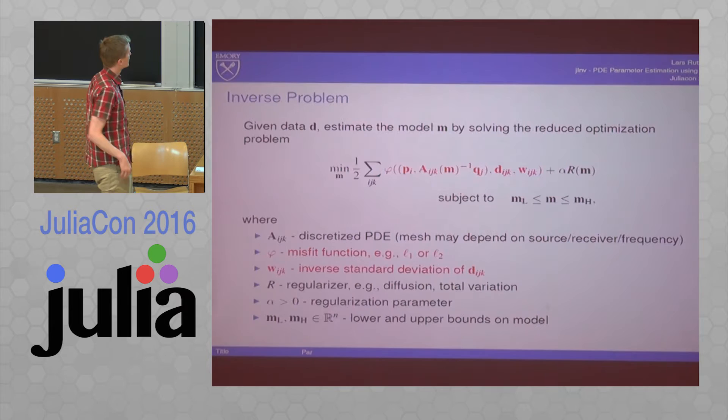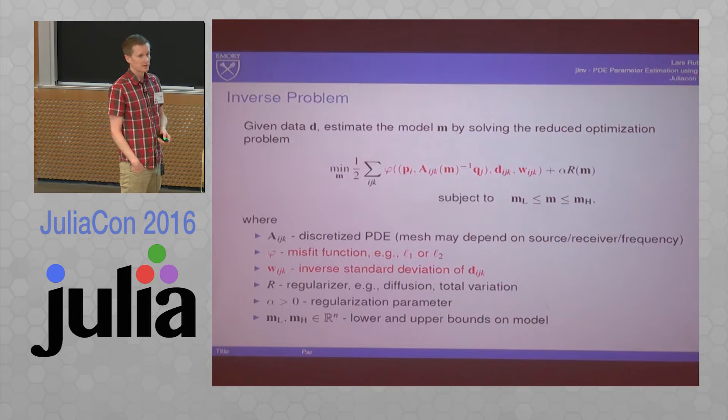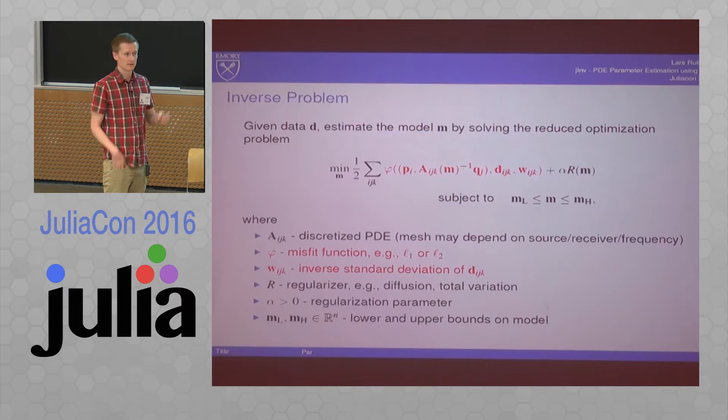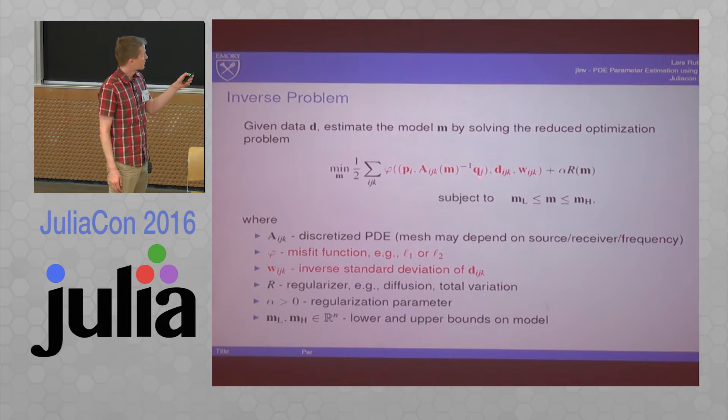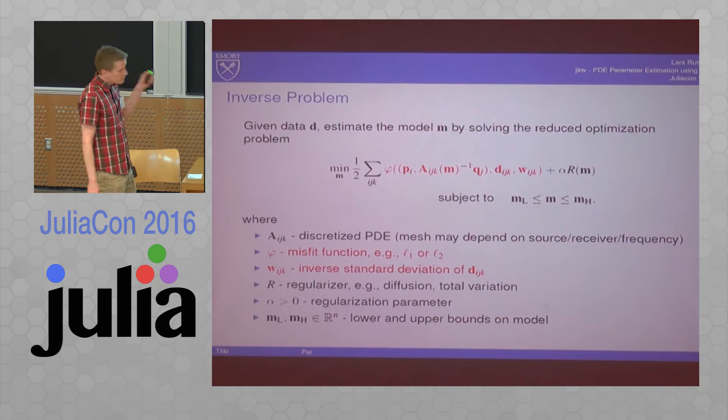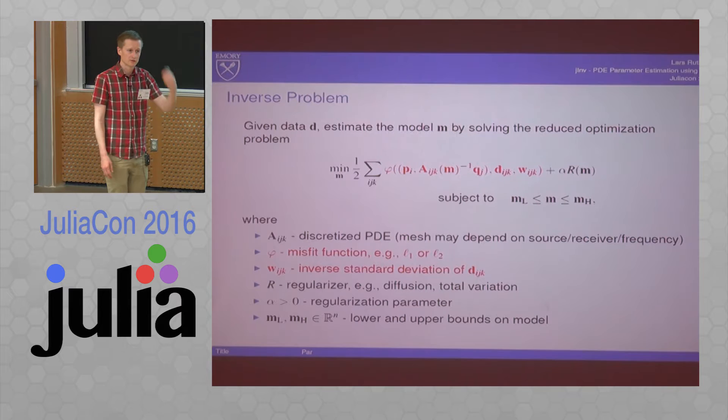We take a look at the so-called reduced optimization problems. So we eliminate the PDE. A_ijk, that's the discretized PDE for a given model. You see this inverse here, because that's applied to the source, and there are some measurements being taken from that. In the objective function, we have the PDE. Each call of the objective function, we need to solve the PDE.